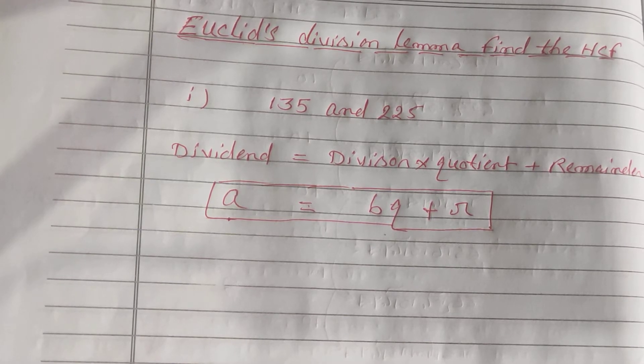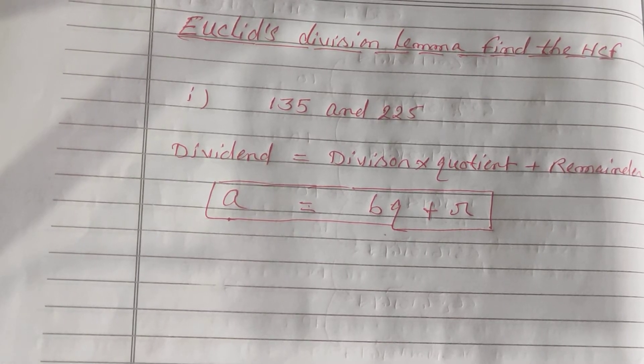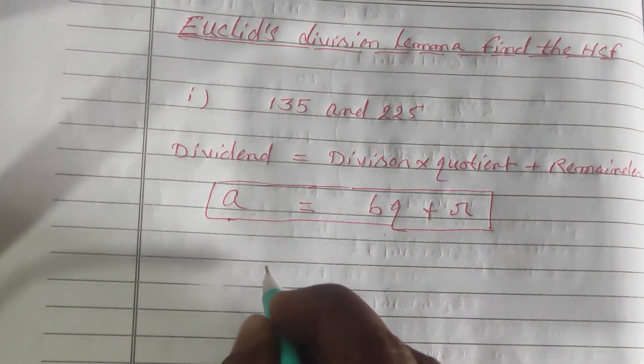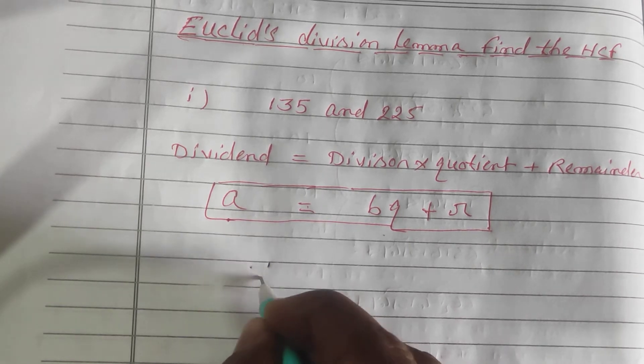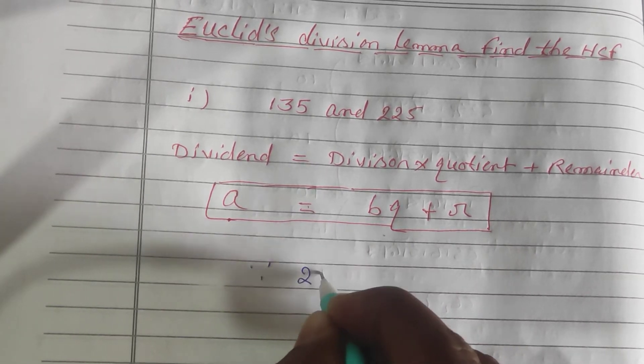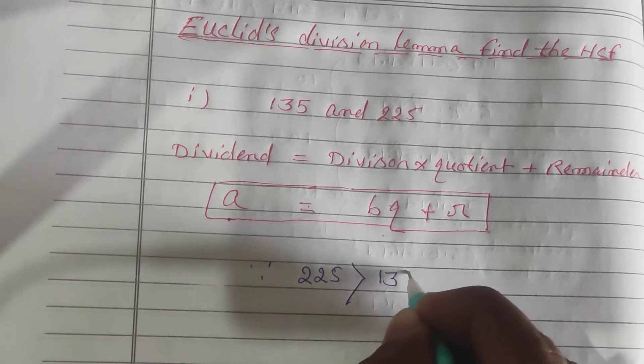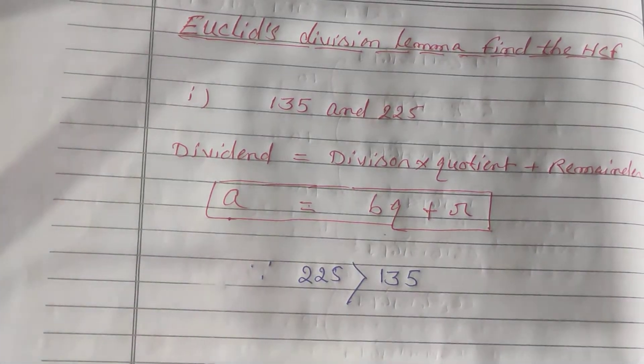Now let's see how to find HCF of 135 and 225 with the help of Euclid's Division Lemma. First, we see that 225 is greater than 135. So what will we do now?